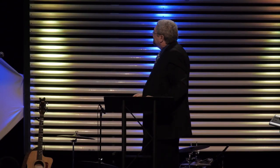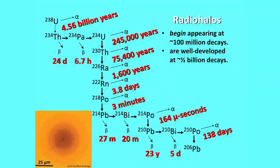If decay continues beyond that, it actually damages the mineral so badly you end up with a black sphere — you can't tell the difference among the rings. Each decay in the series has a certain half-life: how long it takes, on average, for half of that particular element to decay into the next step. This varies quite wildly among these elements.